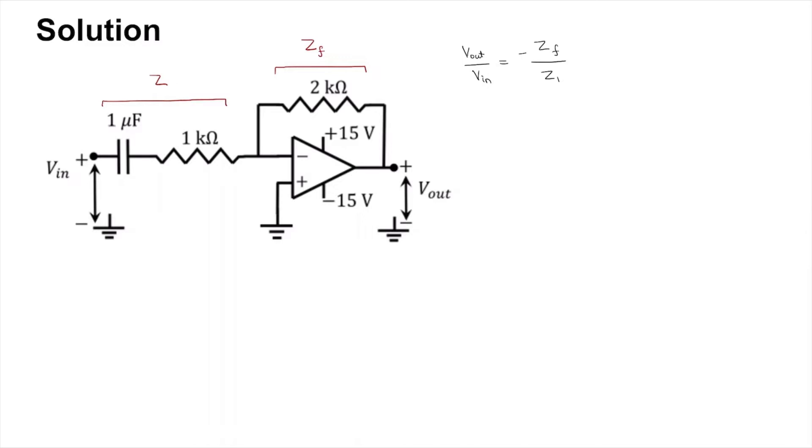From here you can see that Z_f is 2 kilohm, and Z_1 is simply 1 kilohm in series with a 1 microfarad capacitor.